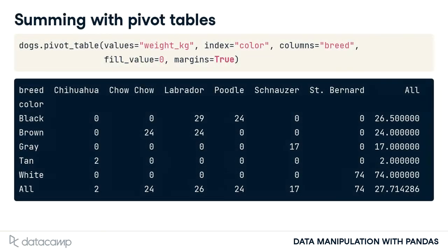If we set the margins argument to True, the last row and last column of the pivot table contain the mean of all the values in the column or row, not including the missing values that were filled in with zeros. For example, in the last row of the Labrador column, we can see that the mean weight of the Labradors is 26 kilograms. In the last column of the brown row, the mean weight of the brown dogs is 24 kilograms.